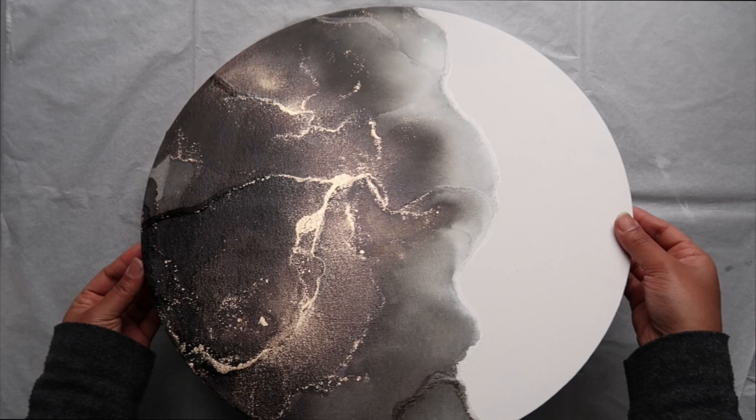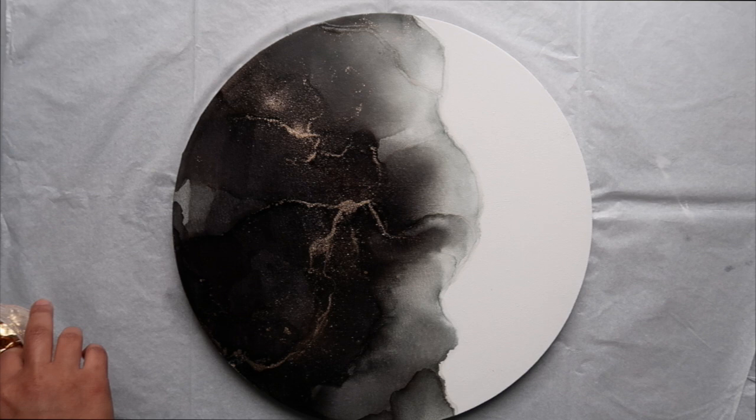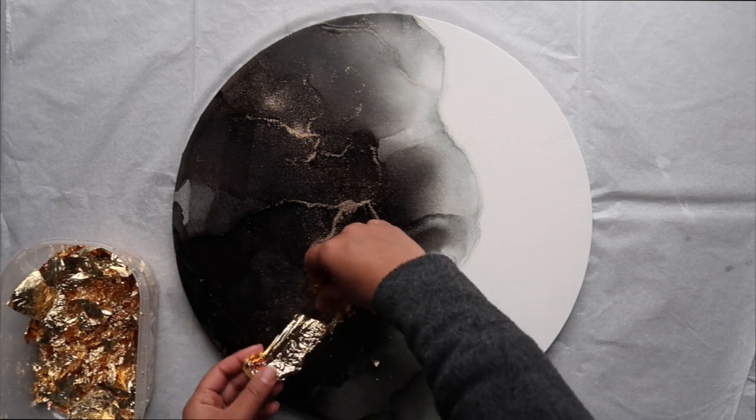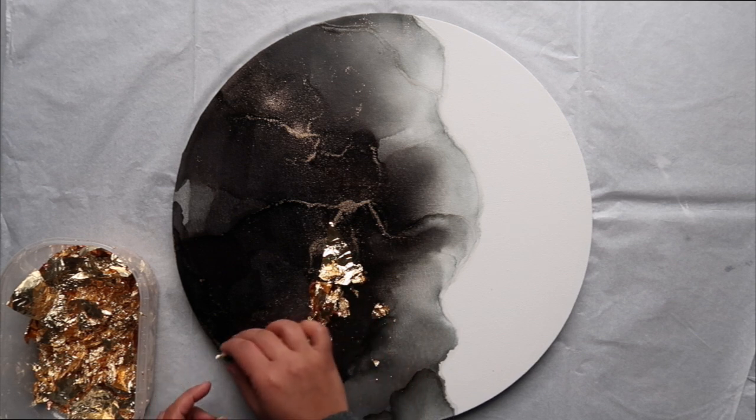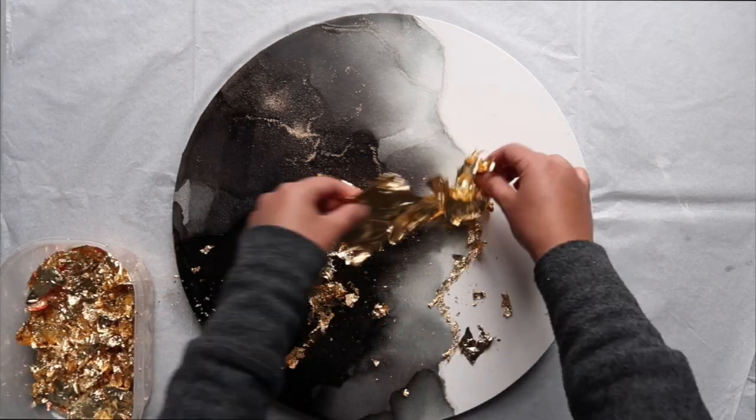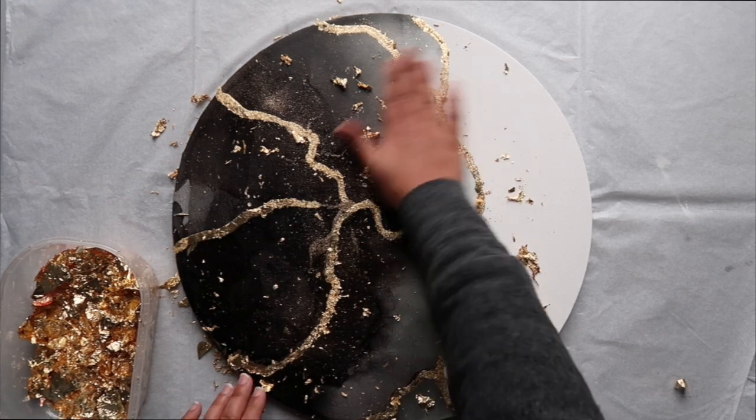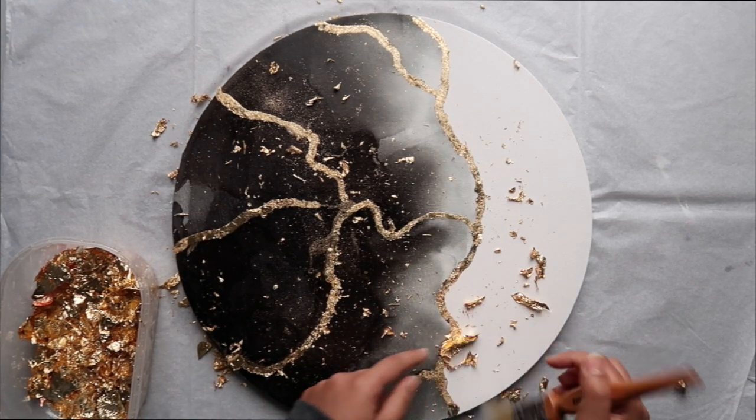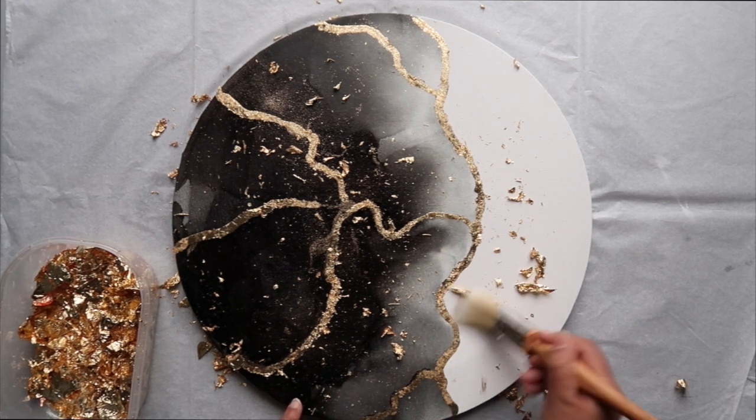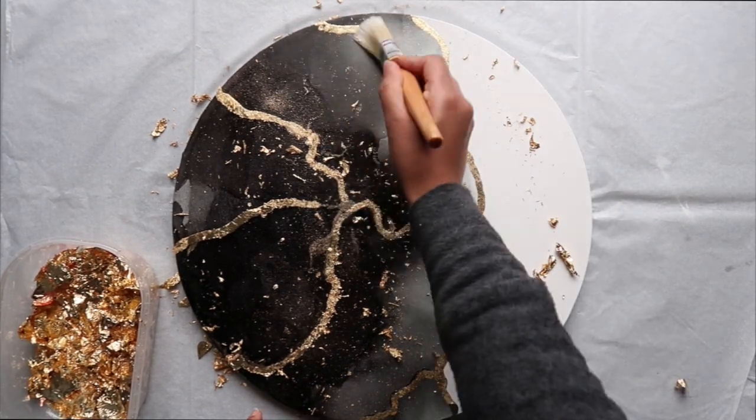And as you can see, my adhesive has dried so it's very sticky now and I'm ready to place my gold leaf on. And I'm just using a soft bristle brush to brush off any excess gold leaf.